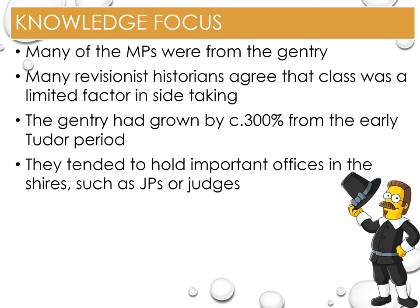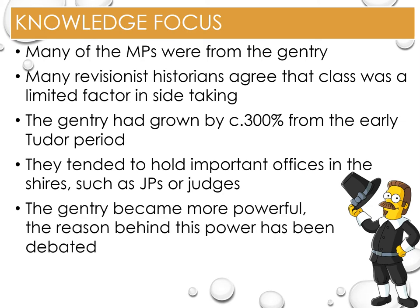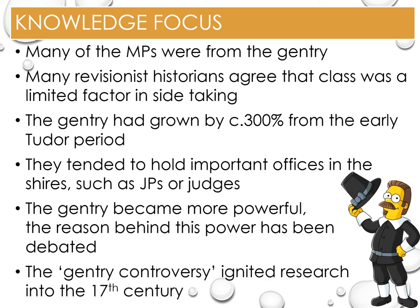As a group, the gentry tended to hold the important civic offices in the shires, such as justices of the peace or judges. For example, Thomas Wentworth in 1628 was made a sheriff by Charles I and rose to the rank of an Earl. The gentry became more powerful in England, and it must be remembered that not all gentry are the same. There are wide variations in the power the gentry had depending on the amount of land they owned or where in England they were based. There is no doubt that gentry became more powerful and influential between 1625 and 1688, and how far that was due to the decline of the nobility is hotly debated. The gentry controversy it ignited spawned research into the 17th century and the 20th century, and became one of the most heated debates seen in the academic world.